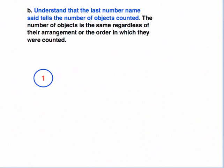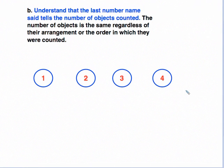For Part B's first statement, students need to understand that the last number name said tells the number of objects counted. So we count 1, then 2 — we said 2, so that's how many we have. Then 3, so we have a total of 3. Likewise, we say 4, so we have a quantity of 4. What might happen with kindergarteners is that after counting 4 objects, if you ask how many there are, they might start counting over — 1, 2, 3, 4 — instead of realizing that the last number counted, 4, is already the total.